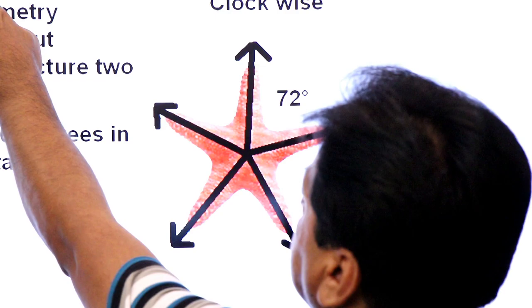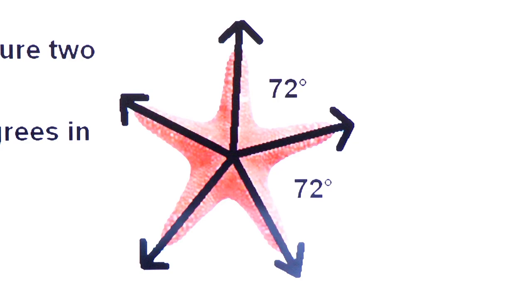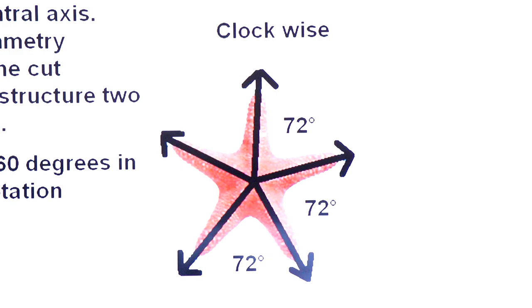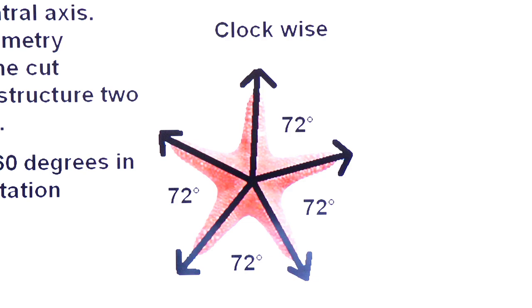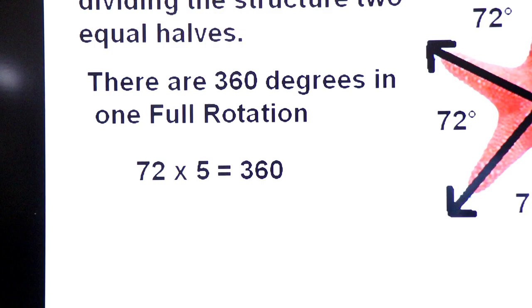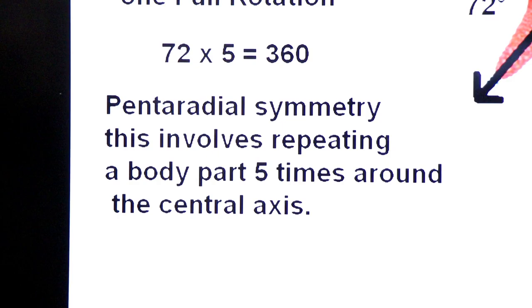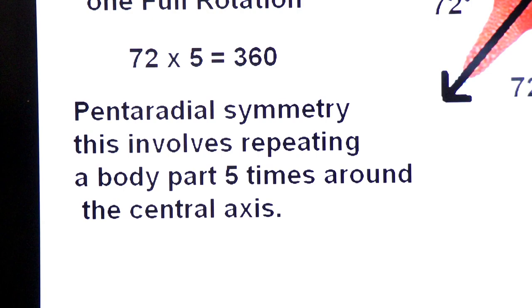So you will see the same repeating pattern. Next 72 degree angle, here is the same repeating pattern. One full turn, 72 multiplied by 5 is equal to 360. So this is 360 degrees which is full rotation, 5 times repeating pattern.